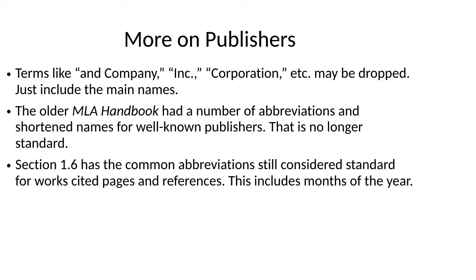Terms like company, inc., and corporation may be dropped — just include the main names. The older MLA Handbook had abbreviations for well-known publishers, but apparently that's no longer standard. However, section 1.6 does have common abbreviations still considered standard for works cited pages, mostly including things like P for page, the months of the year, Shakespeare plays, books of the Bible, and commonly cited works.